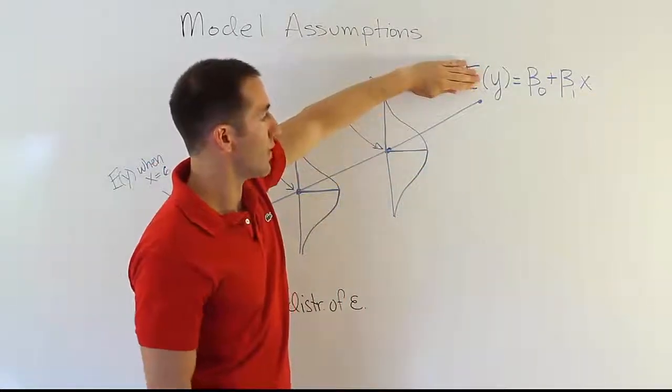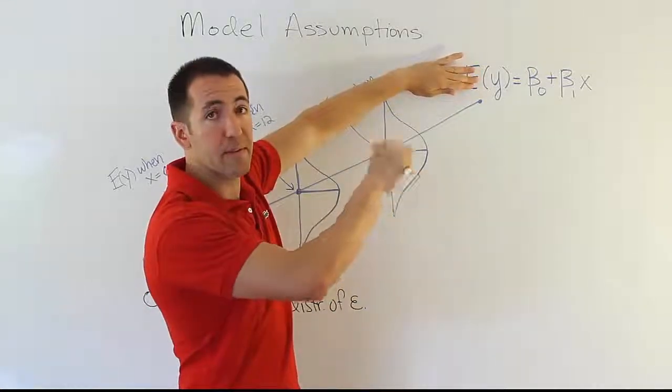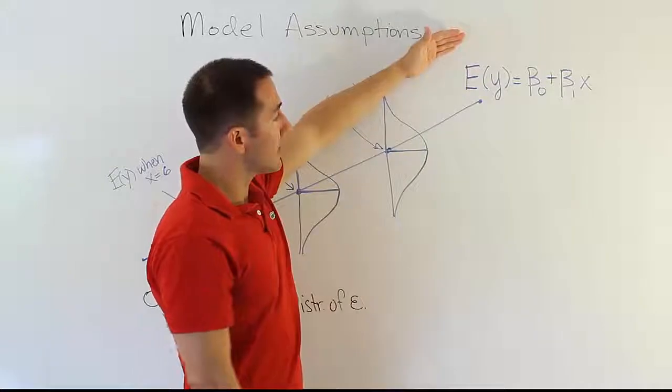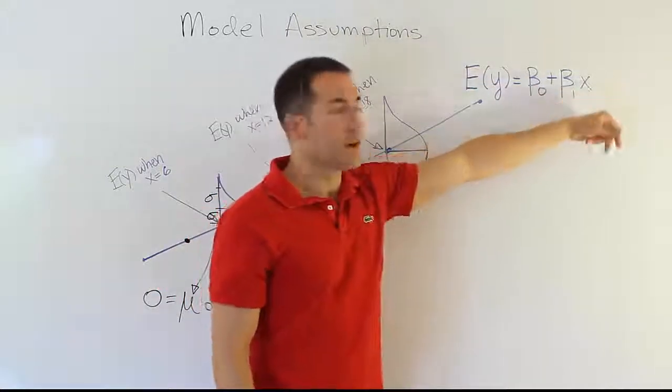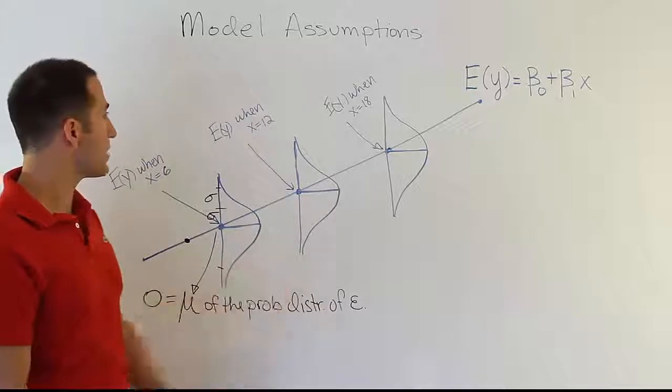Remember, when we first expressed the model, we didn't have expected value of y. We had y equals beta naught plus beta 1x plus the error term. When you take the average, the error term drops out because its average value is zero.